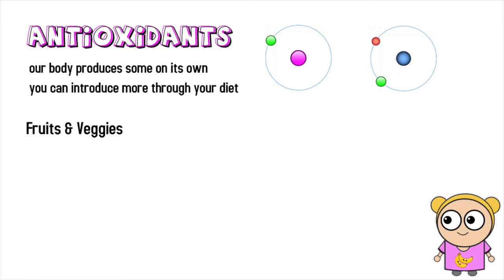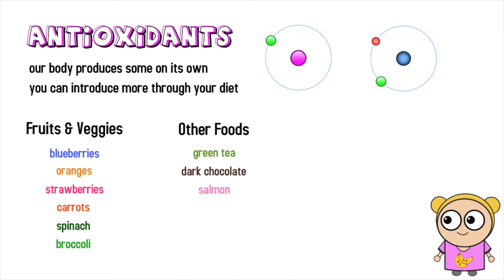Some examples of antioxidant fruits and veggies include blueberries, oranges, strawberries, carrots, spinach, and broccoli. Other antioxidant foods include green tea, dark chocolate, salmon, garlic, pecans, and sweet potato.